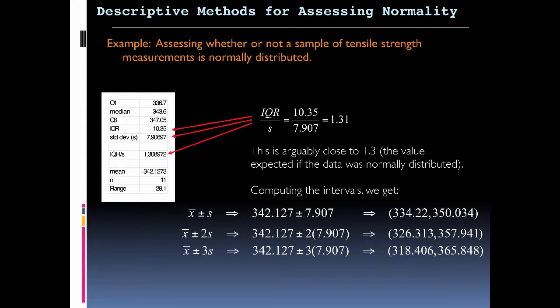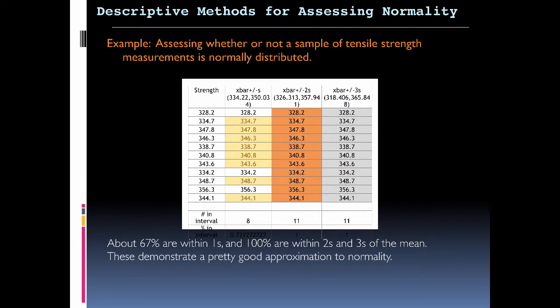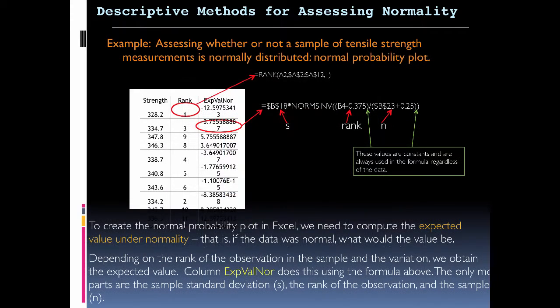Now we're going to look at this. We're going to say that's pretty close to 1.3, we got 1.31. We're looking for something that falls within three standard deviations. And when we're done, we find that about 67% are within one standard deviation. That's what we're looking for. 100% fell between the second and the third. So this indicates to us that we do have a normal distribution here.